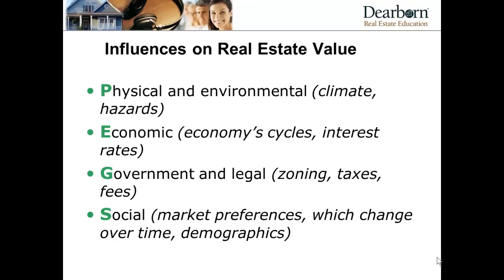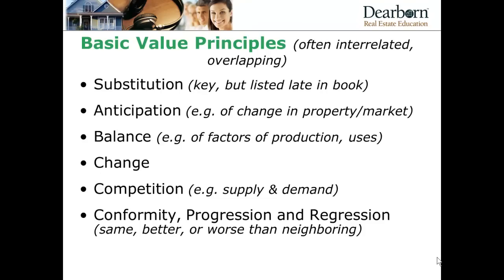G is for government and legal influences — typically one of the biggest — including zoning regulations and taxes or fees assessed on the property. S is for social influences, covering market preferences, demographics, and how these change over time. For example, is there increasing demand in a neighborhood because more young people or more retirees are moving in who prefer that type of property? It's important to understand these influences where there may be differences between properties you're considering as subject or potential comparables.